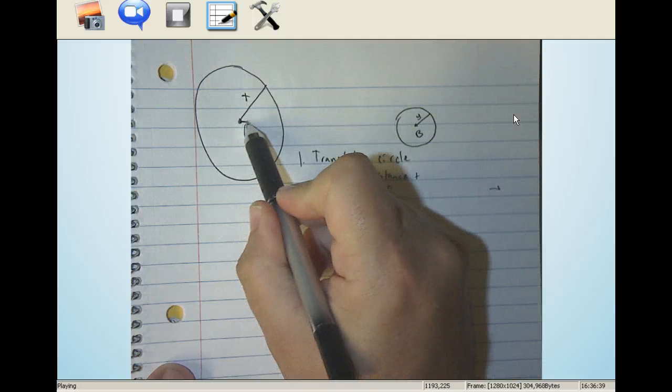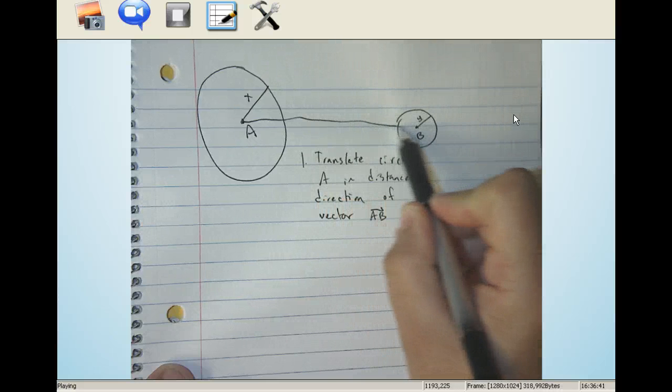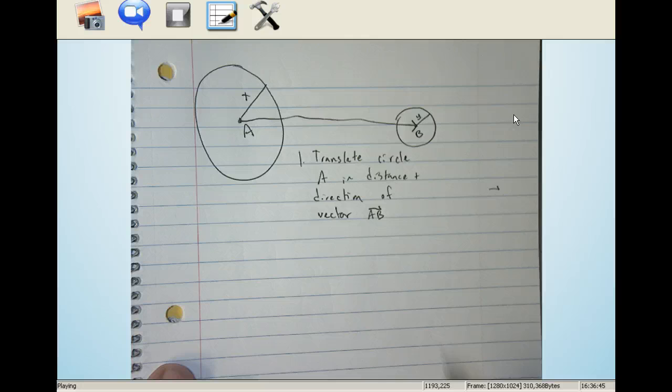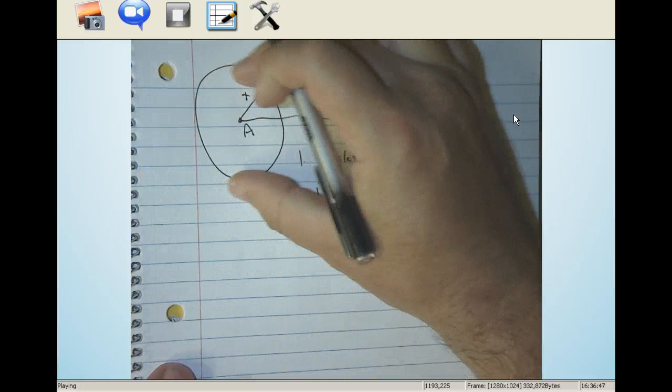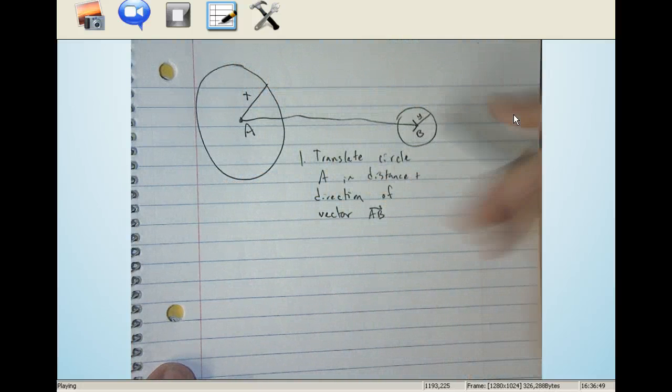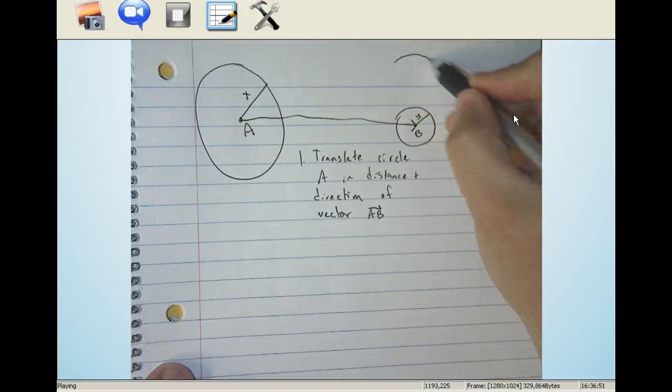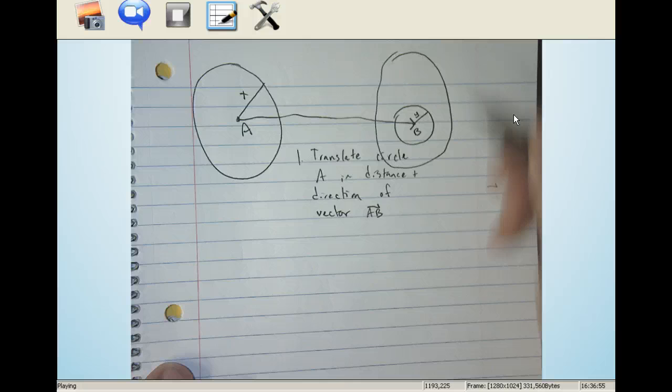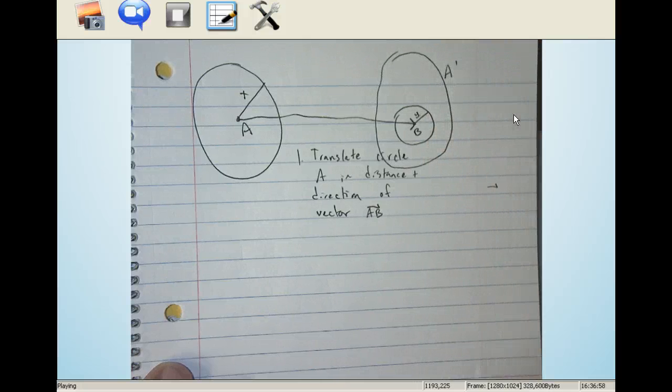Which is the vector that connects A to B. There is the vector. So now once we take this entire circle and we slide it over here, we're going to have circle that exists here. It's kind of ugly. But we'll call this one A prime.